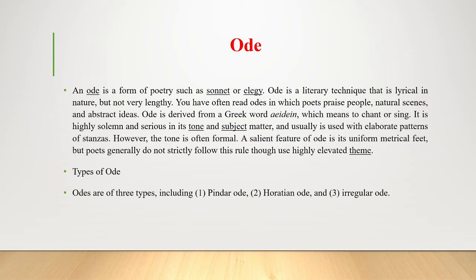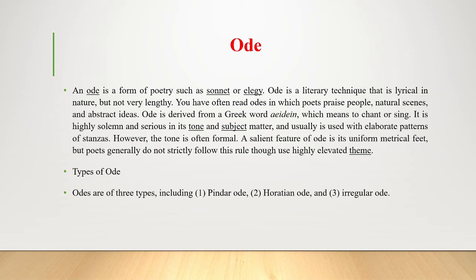The classical prototype was established by the Greek poet Pindar, whose odes were modeled on the songs by the chorus in Greek drama. His complex stanzas were patterned in sets of three: moving to the left, the chorus chanted the strophe; moving to the right, the antistrophe; then standing still, the epode.